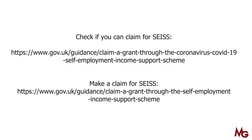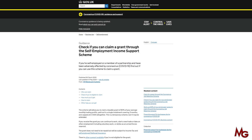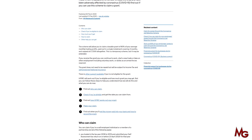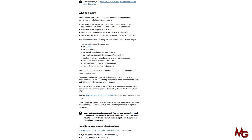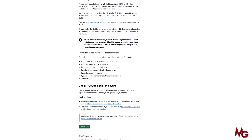At the bottom of the video there are two links. One of them is 'check if you can claim a grant through SEISS' and the other link is 'make your claim for SEISS'. Click on the link 'check if you can claim SEISS'. When you click on that link, scroll down and you'll see a green button 'check now'. Click that button.